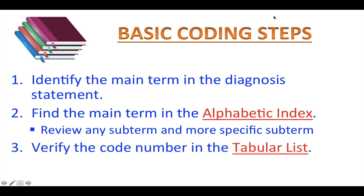Next, you must review any subterms or more specific subterms if applicable. From this step, you should be able to obtain a code or codes. However, it's very, very important that you must follow the next step, which is to verify the code number in the tabular list. The tabular list gives you more specific codes. You should never rely on your memory or use only the alphabetical index to assign the code, or you may run the risk of using the wrong ICD-10-CM diagnosis code. Please keep that in mind.